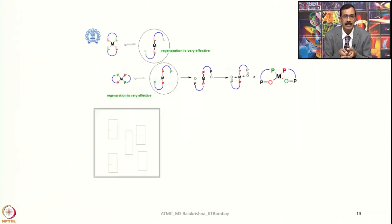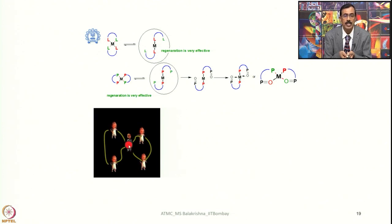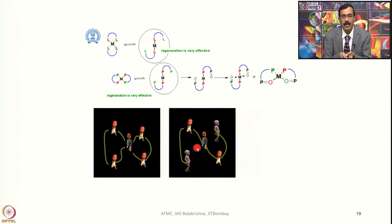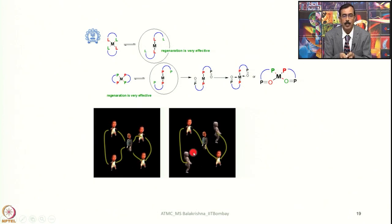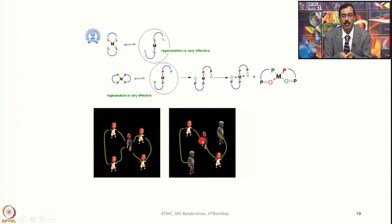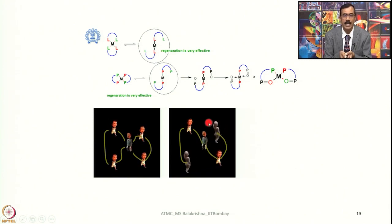Let us look into bidentate ligands in the same context. Now the difference is these two children are tied together. The father knows that even if his attention is diverted a little, two kids can go away, so what he does is ties the hands of the children together. In that case, if he loses grip on two children they cannot go, because their hands are tied with another one over which he has a firm grip.